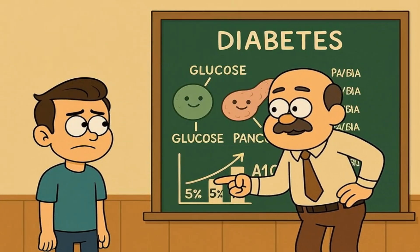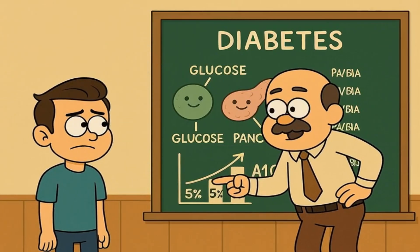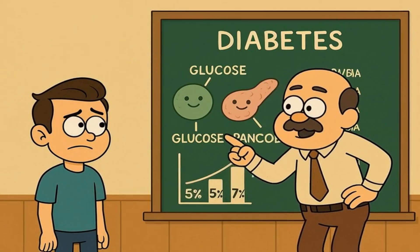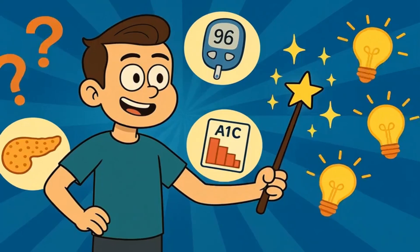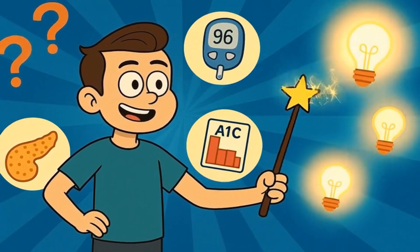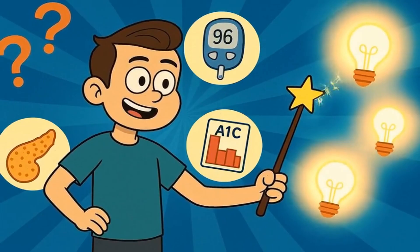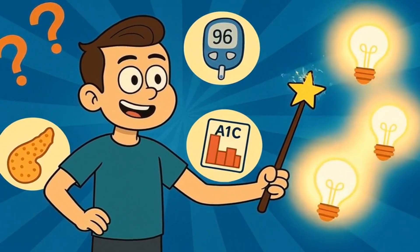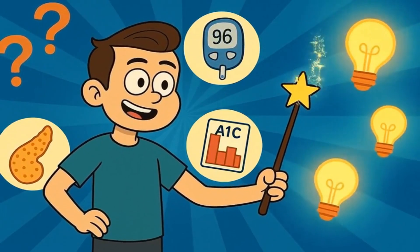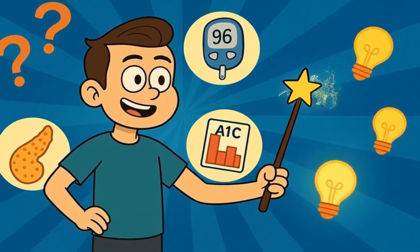Today I'm going to explain diabetes and whether you can reverse it by lowering your A1C, like you're 5 years old. And by the end, you'll understand what diabetes actually is, what A1C means, and whether you can wave a magic wand to make it all disappear.